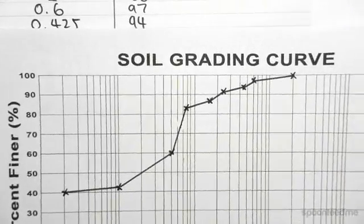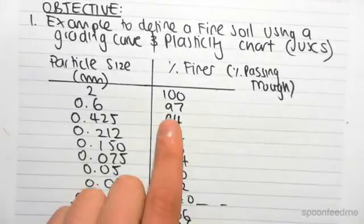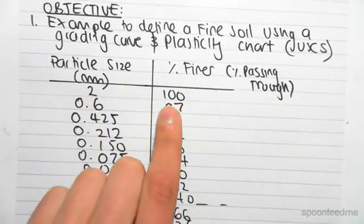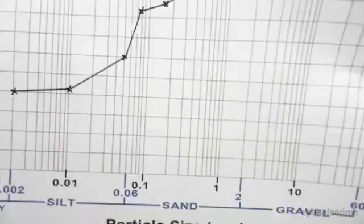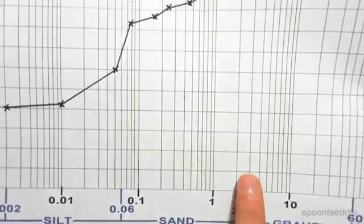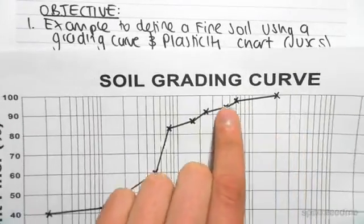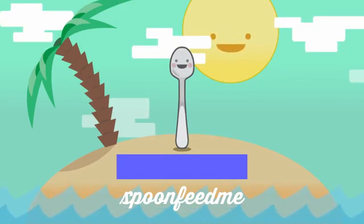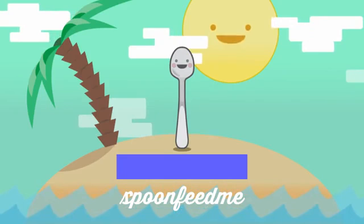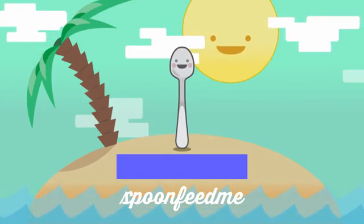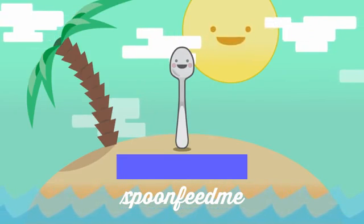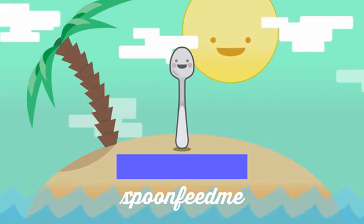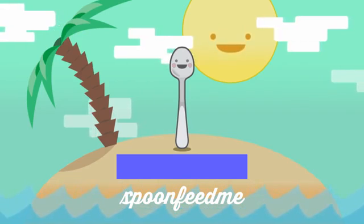So very easy to graph. You should see how we graph this. We had particle size 2 millimeters and we had 100% finer. So all I did was I went to 2 millimeters and I went up to 100% finer.